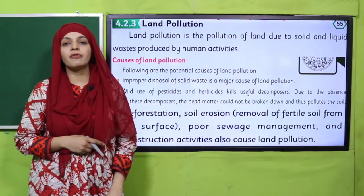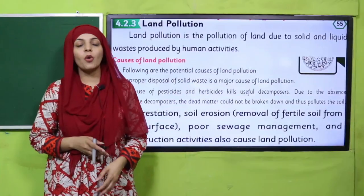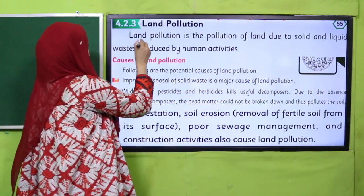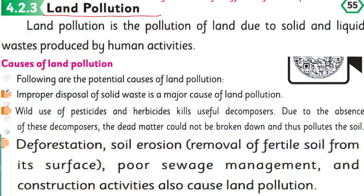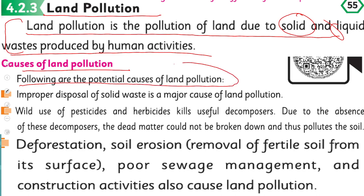Now is the time for reading. Quickly open page number 55 in your Science 5 books. I hope everybody has opened the page. Now let's start the reading — put your fingers where I will read. Land pollution: land pollution is the pollution of land due to solid and liquid waste produced by human activities. Land pollution aisi pollution hai jo solid ya liquid waste ko zameen ke upar dump kar diye jane ki wajah se hoti hai.